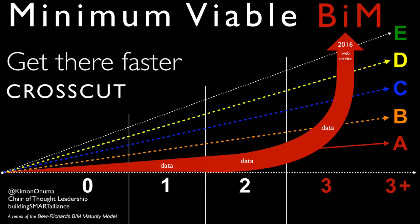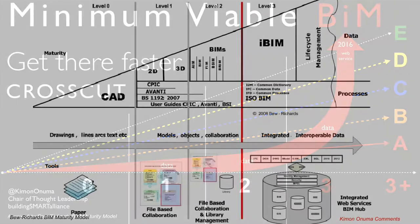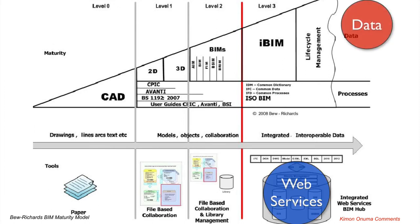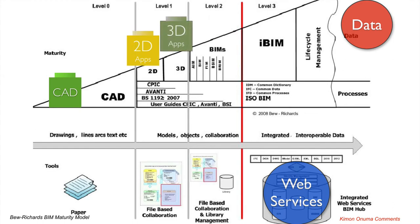Cross-cutting to get there faster allows us to create value and identify how we fit into this ecosystem and how we can bring value to owners, because we're already there — we're already dealing with the data. So let's just run to this. What if we shake up the maturity model and turn it on its side, thinking in terms of the web services referenced in level 3 — the data, the processes, the CAD — and build these up like little Lego blocks?